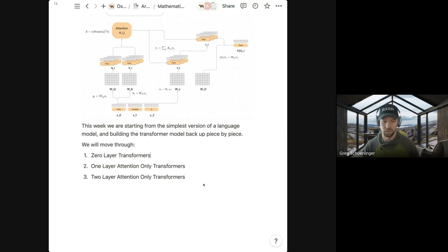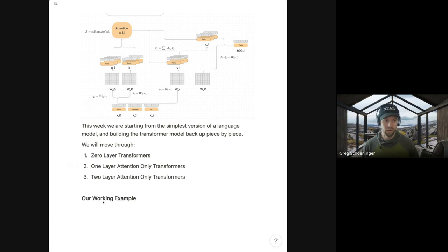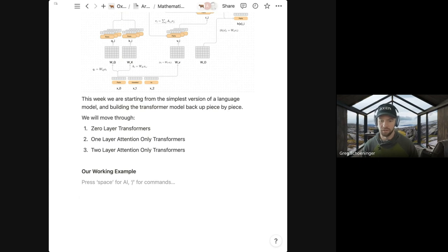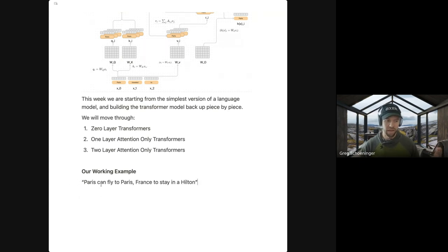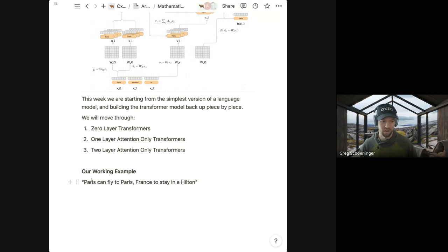I hope to get through all of these sections, but it's a long paper, so we'll see where we're at at the 30 or 40-minute mark. Last week we had a working example sentence — something like 'Paris can fly to Paris, France to stay in a Hilton,' with Paris being Paris Hilton, and having to disambiguate words like 'can' and 'fly' throughout the sentence.